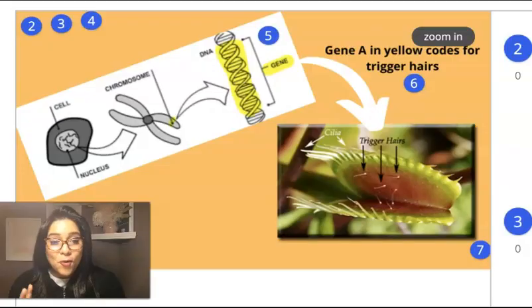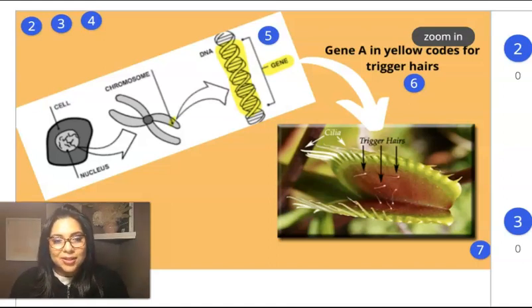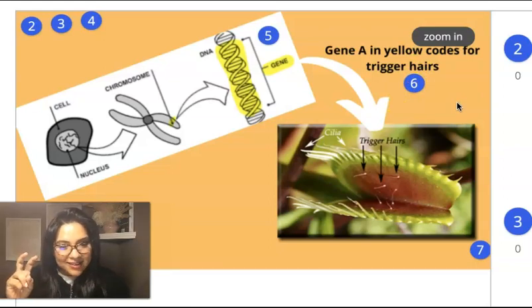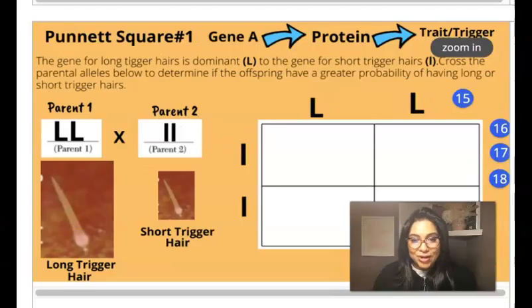So poor little fly. But let's go ahead and explore what happened here a little bit more in depth. We're going to be focusing on what we're going to label gene A, and it codes for trigger hairs, which is what you saw on the Venus flytrap that activated that time clock between the first touch and when it snapped closed.